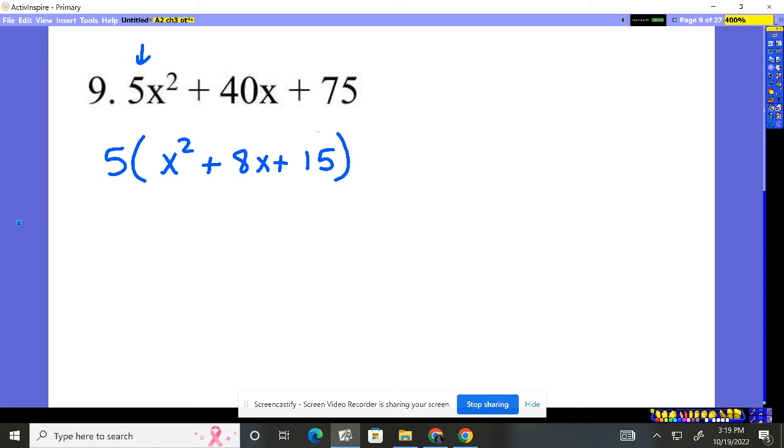So I'm now going to just focus on this trinomial. I know I'm going to have a 5 out front, and then I'm going to have my two binomials right here, which obviously are x and x. Now, everything's addition, so I know everything left is going to be x plus and x plus.